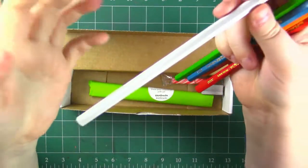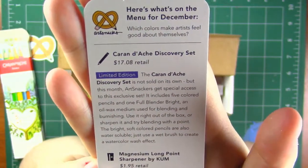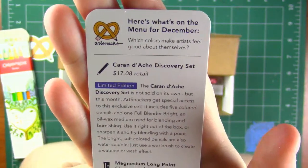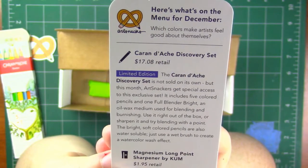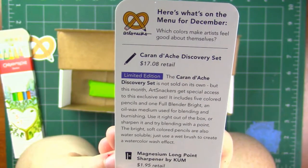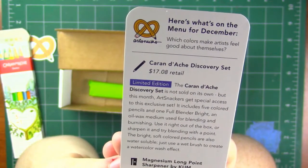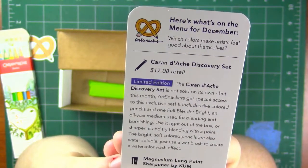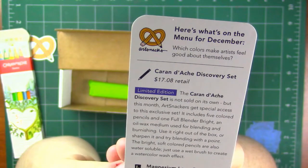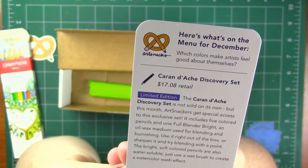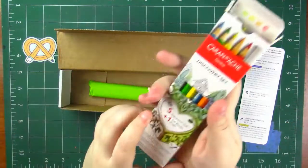Let's see what the card has to say about them. It's a limited edition Caran d'Ache Discovery set, $17.80 retail. The Caran d'Ache Discovery set is not sold on its own but this month Art Snackers get special access to this exclusive set. It includes five colored pencils and one full blender bright, an oil wax medium used for blending and burnishing. Use it right out of the box or sharpen it and try blending with a point. The bright soft colored pencils are also water soluble - just use a wet brush to create a watercolor wash effect. That's really cool and that's $17 bucks. This is over half of what I paid for this box already.